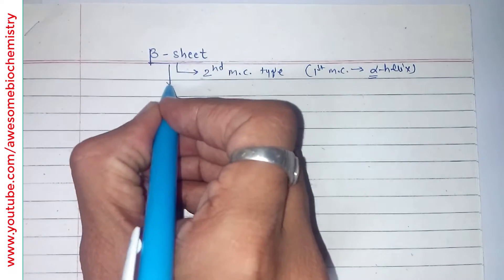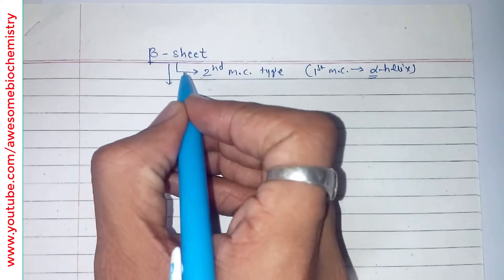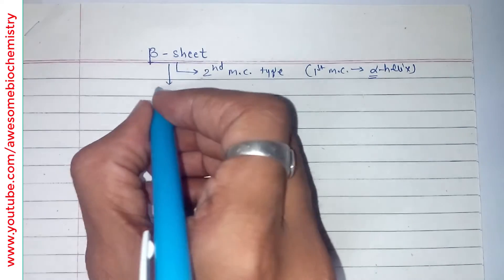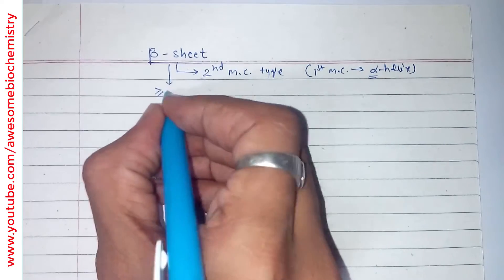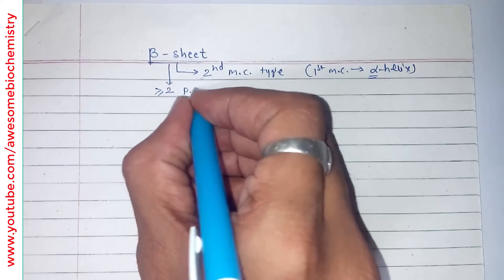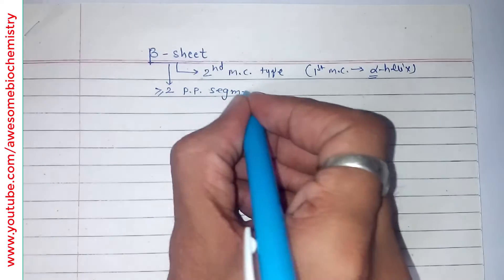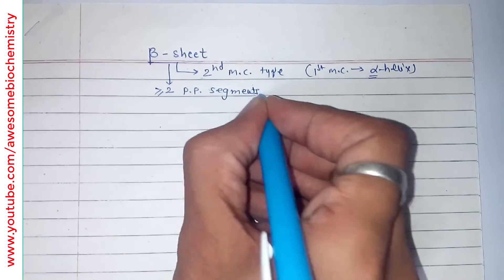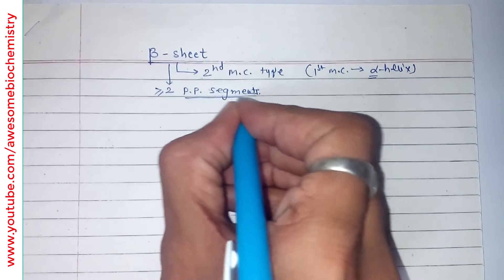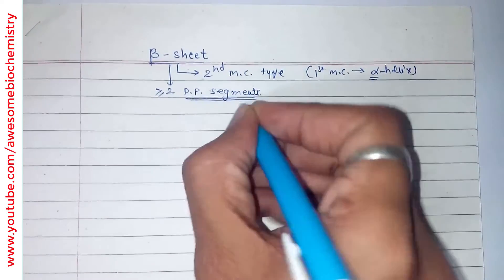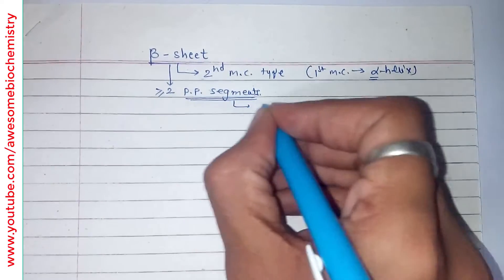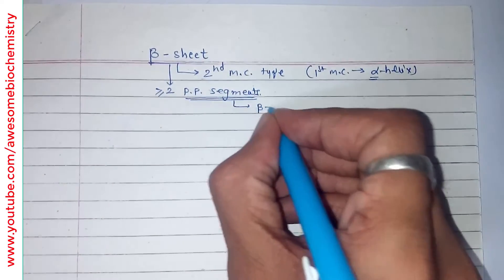This beta sheet is made up of two or more polypeptide segments, and each of these polypeptide segments is known as a beta strand.